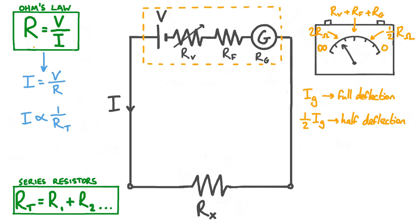So we can see that because the deflection of the galvanometer's needle is proportional to current, but current is inversely proportional to resistance, the scale on our ohmmeter is non-linear — that is, the deflection is not proportional to the resistance we're measuring. Now that we've seen how to assemble and calibrate an ohmmeter and how to interpret the reading on the dial, let's have a go at answering a question.